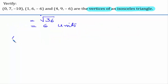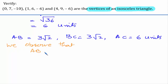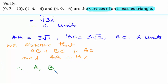Now we observe that AB is 3 root 2, BC is also 3 root 2, and AC is 6 units. We observe that AB plus BC is not equal to AC, and AB equals BC. Therefore A, B, C are vertices of an isosceles triangle.